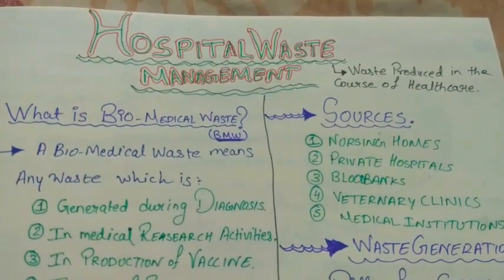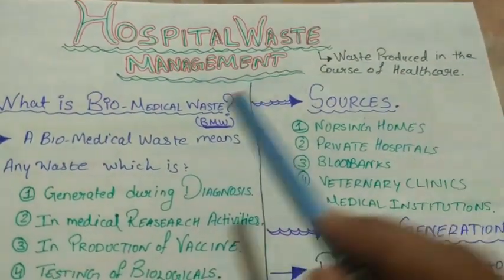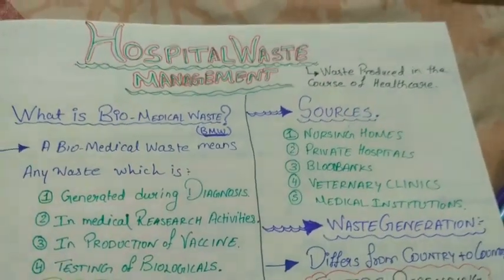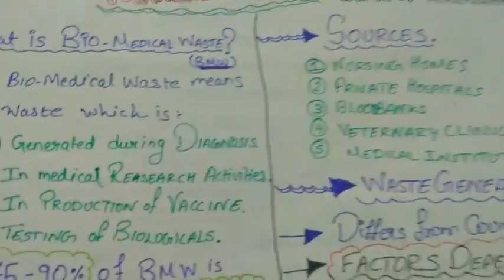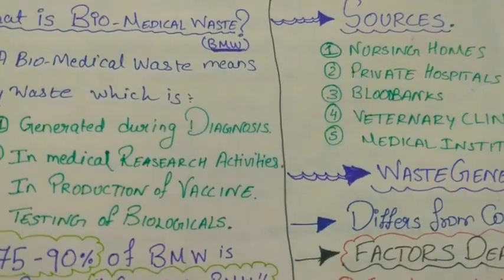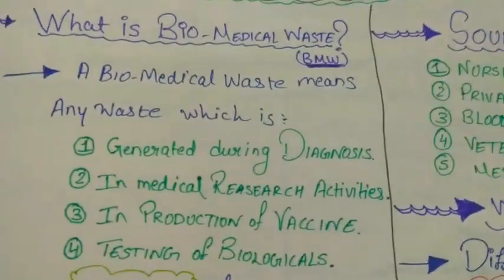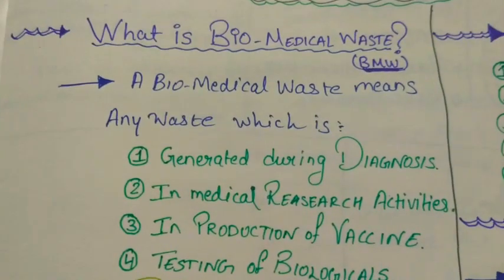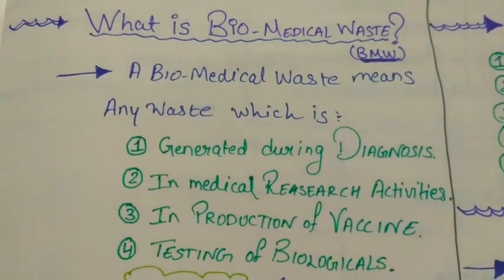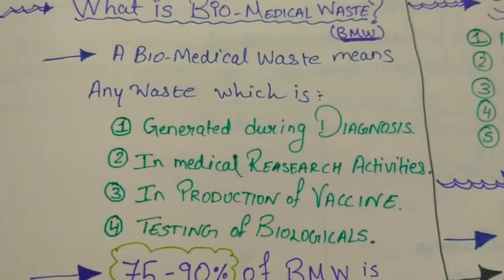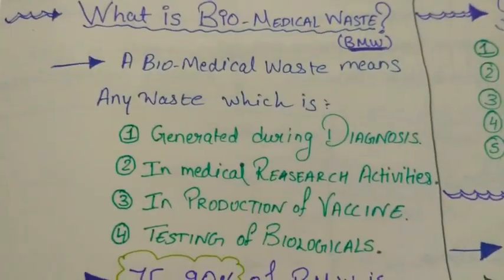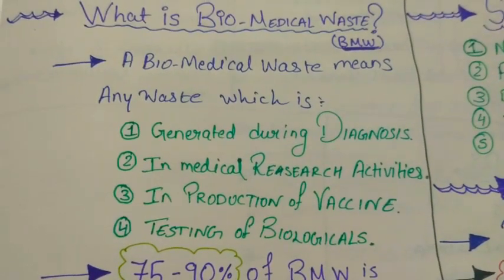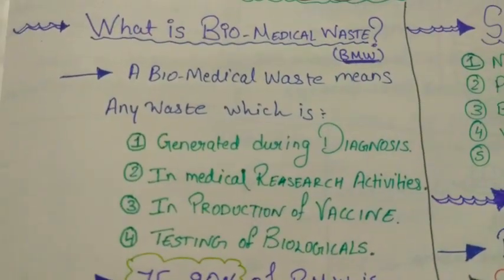Hospital Waste Management — first of all we need to know what is hospital waste. Hospital waste is any type of waste which is produced in a hospital, or any type of healthcare facility — not only hospitals, but also nursing homes and so on. We also need to know what is biomedical waste, abbreviated as BMW, which is easy to remember.